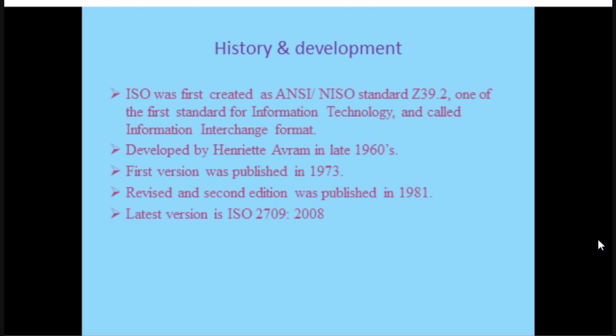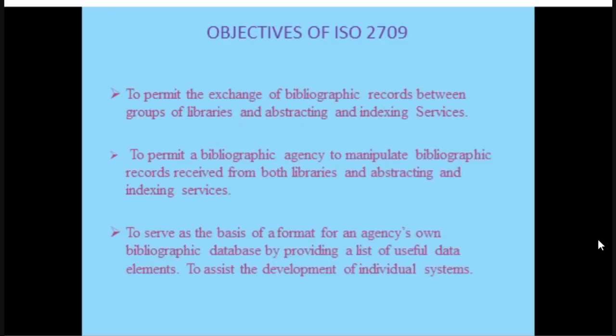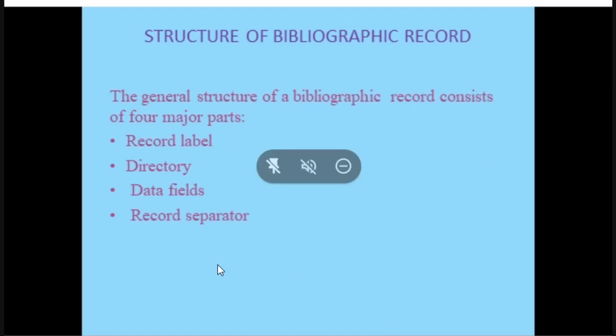The latest version of ISO 2709 is from 2008, and the first version was from 1973. The main objective of ISO 2709 you need to remember is the exchange of bibliographical records between groups of libraries. Now we come to the actual structure and framework — how a bibliographical record is designed according to ISO 2709.